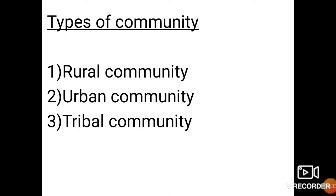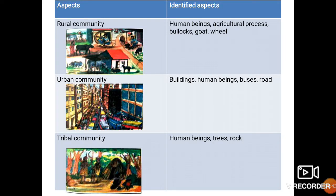Now let us see the types of community: rural community, urban community, and tribal community. The aspects that help us identify a rural community include human beings, agricultural process, bullocks, goat, and other livestock. These aspects help us identify that this type of community is a rural community.